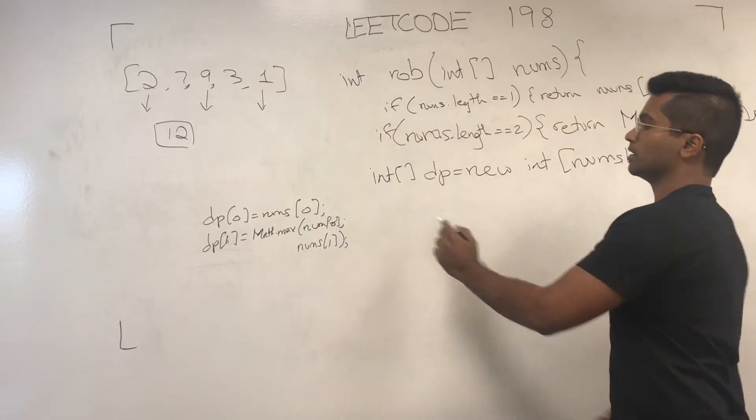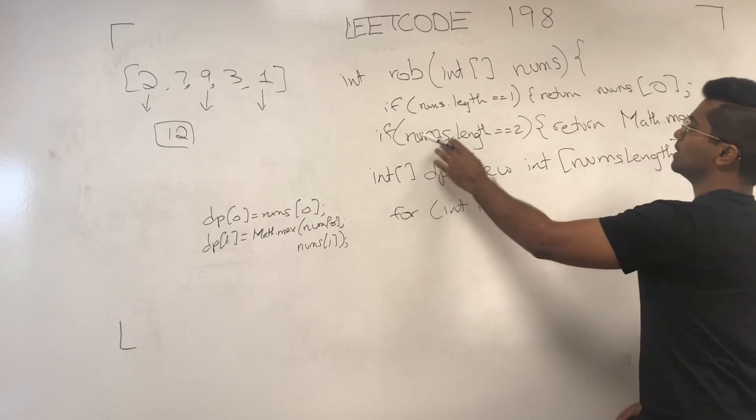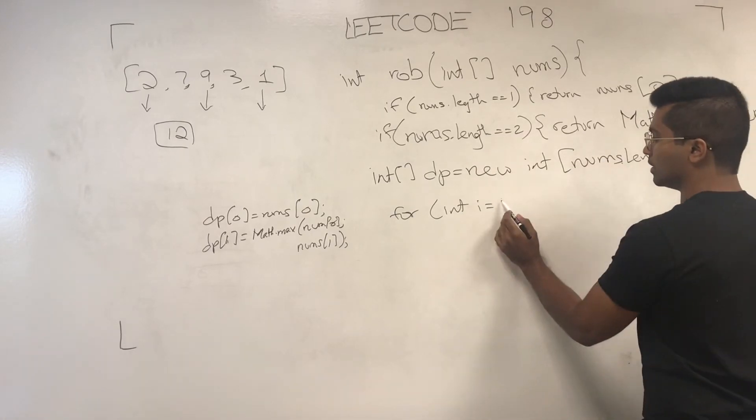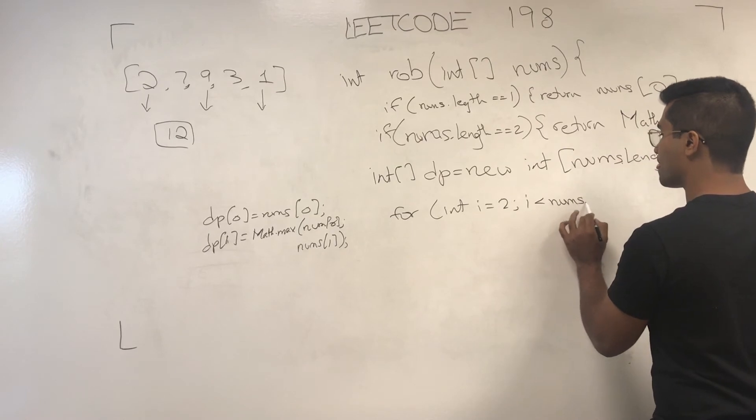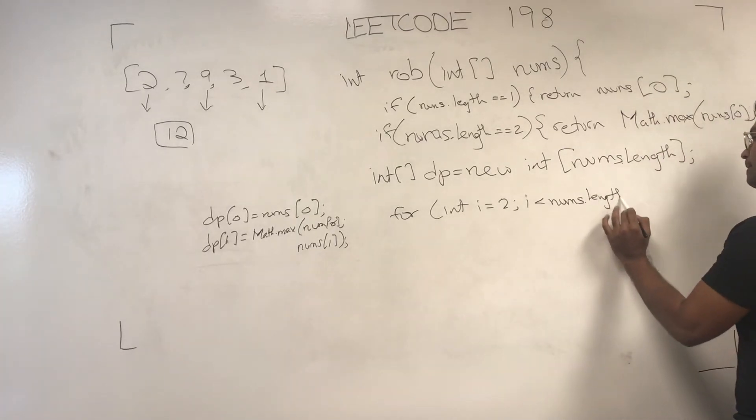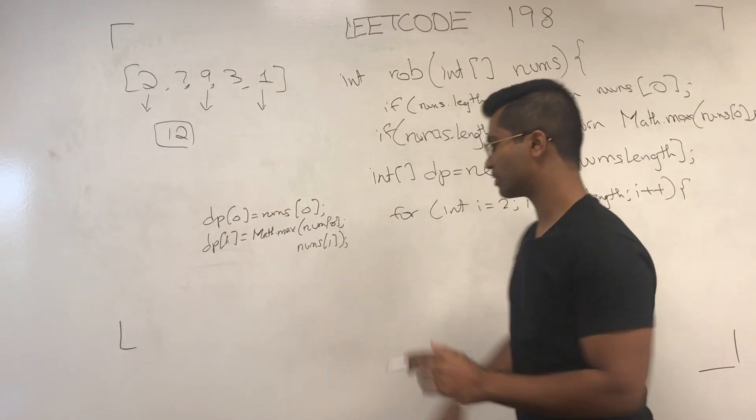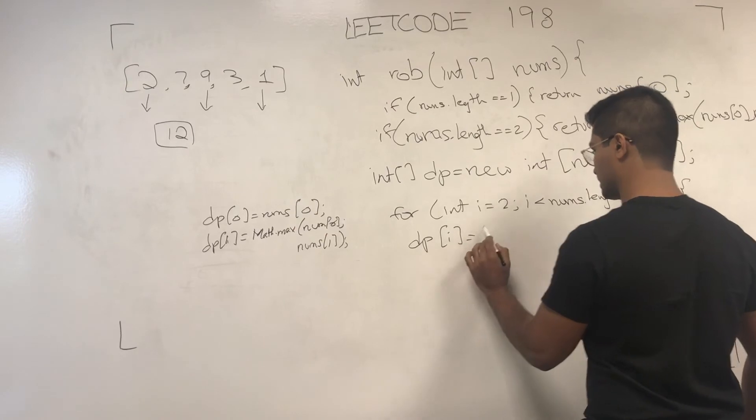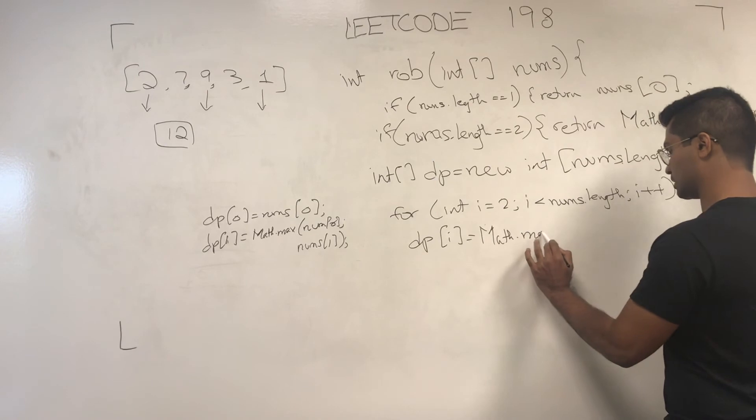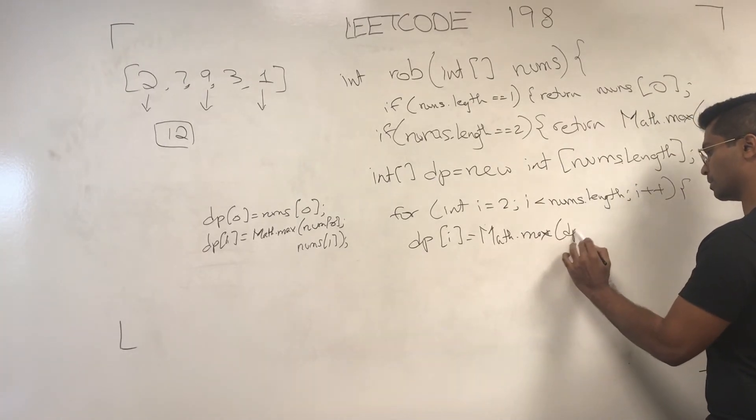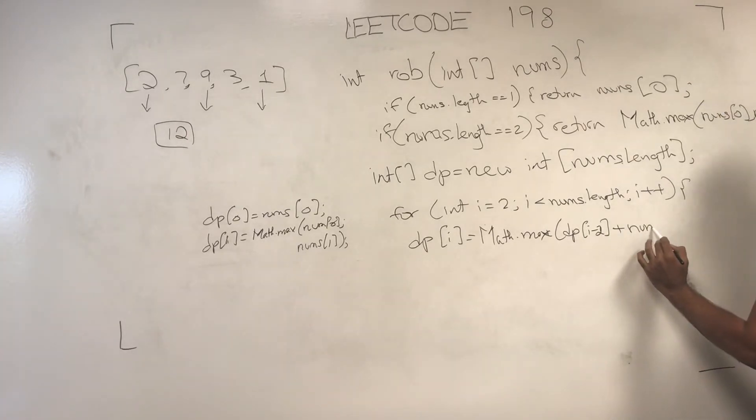Now after that we go into the for loop and we can go into the for loop because we passed the case that nums is greater than length 2, so it's a minimum of 3. And I already wrote the condition, so it's pretty much the same thing. DP of i is math.max of...